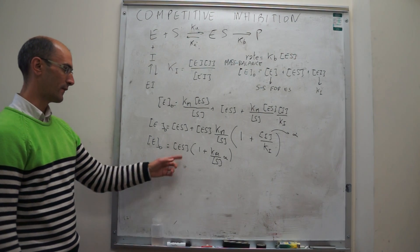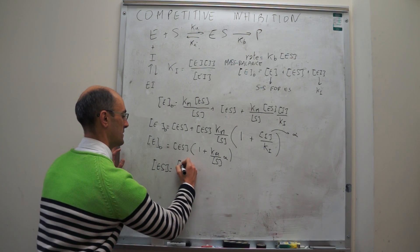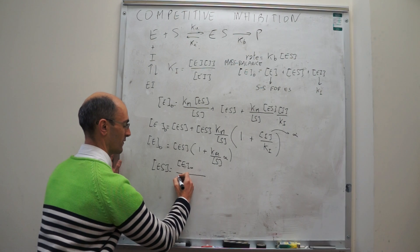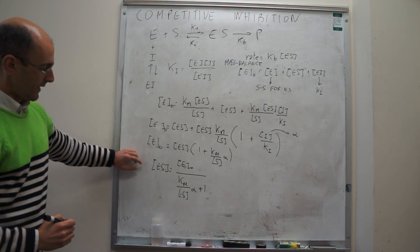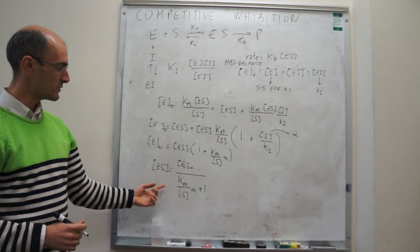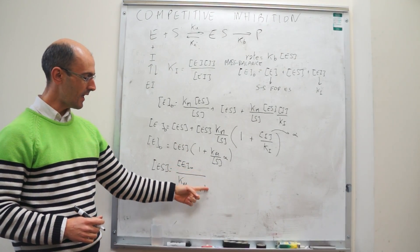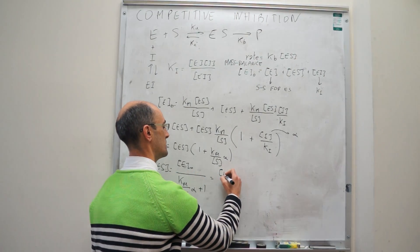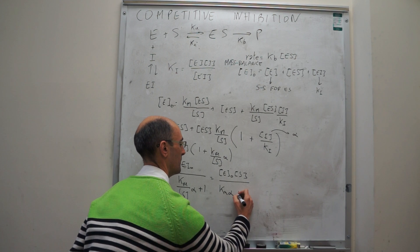Solving for [ES]: [ES] = E₀ / (K_M·α/[S] + 1). Multiplying numerator and denominator by [S] gives a more familiar form: [ES] = E₀·[S] / (K_M·α + [S]). This expression can now be plugged directly into the rate law.